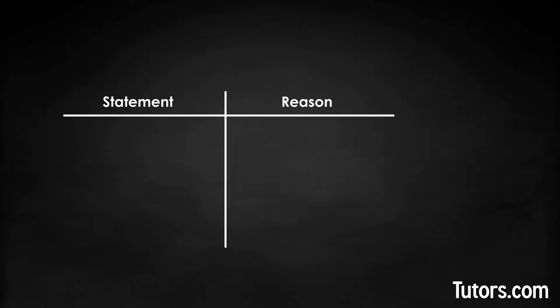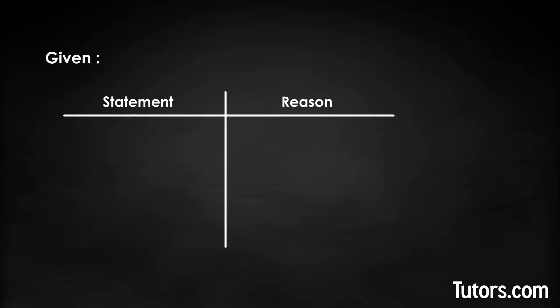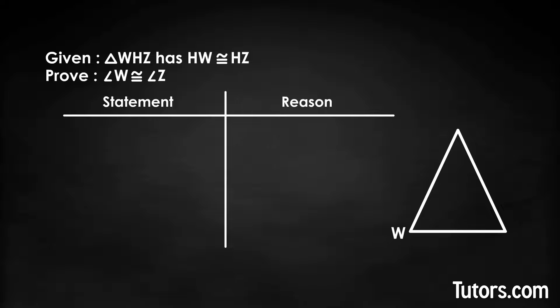Say you are asked to prove the isosceles triangle theorem, which states that if two sides of a triangle are congruent, their opposite angles are congruent. You will be given some information, like triangle WHZ has side HW congruent to side HZ, making it an isosceles triangle. You are asked to prove angle W is congruent to angle Z. Your two-column proof would look like this. Take a few seconds to review the two-column proof. Feel free to pause the video if you need more time.